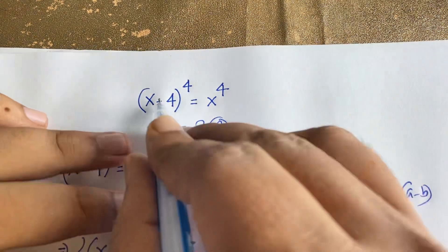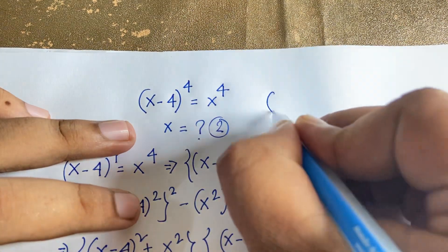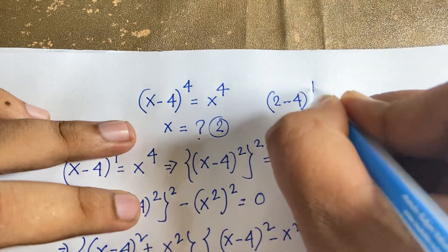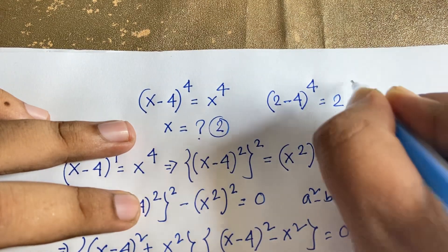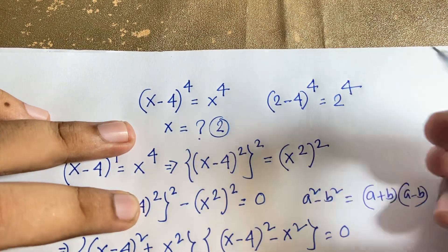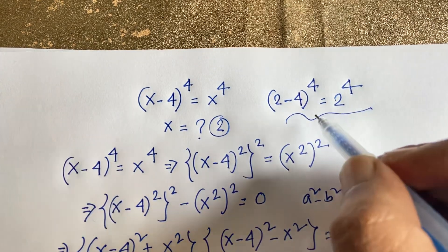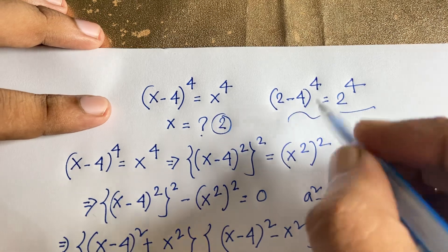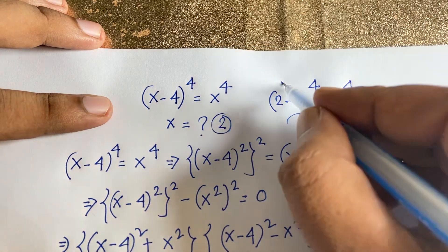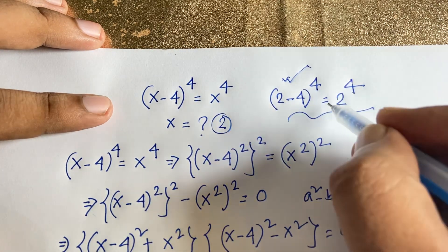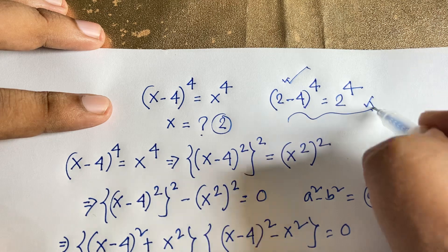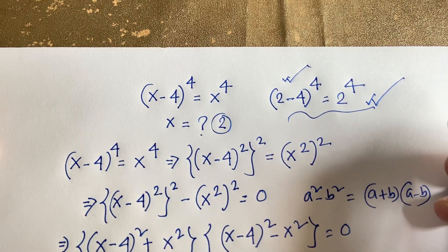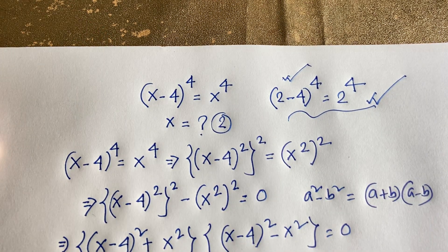Checking: (2 minus 4) to the power 4 equals (-2) to the power 4. Since the power is even, the result is always positive, so (-2) to the power 4 equals 2 to the power 4. Both sides are equal, confirming x equals 2. Thank you all — if you enjoyed this video, please subscribe to my channel for more interesting videos. Goodbye, take care!